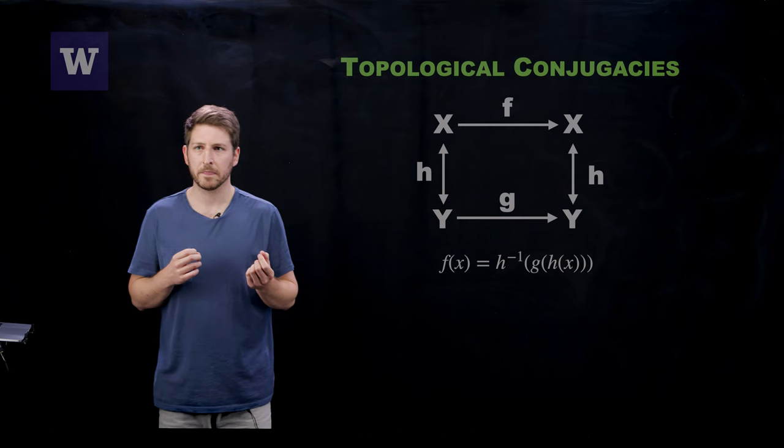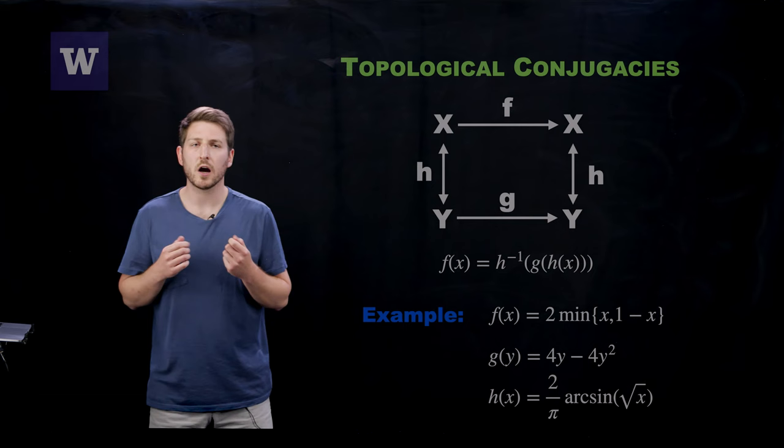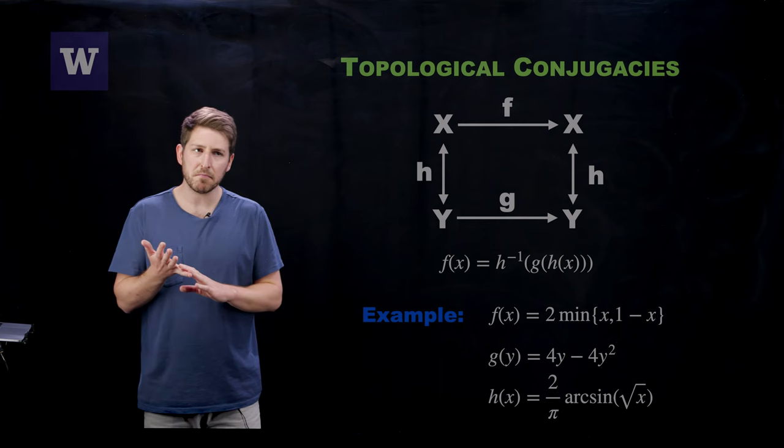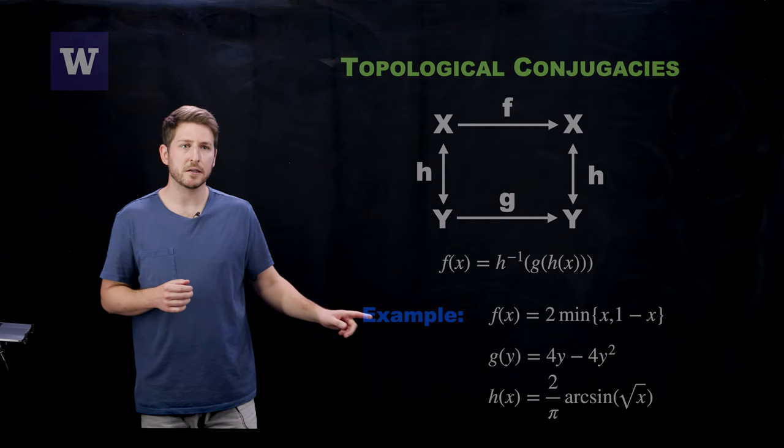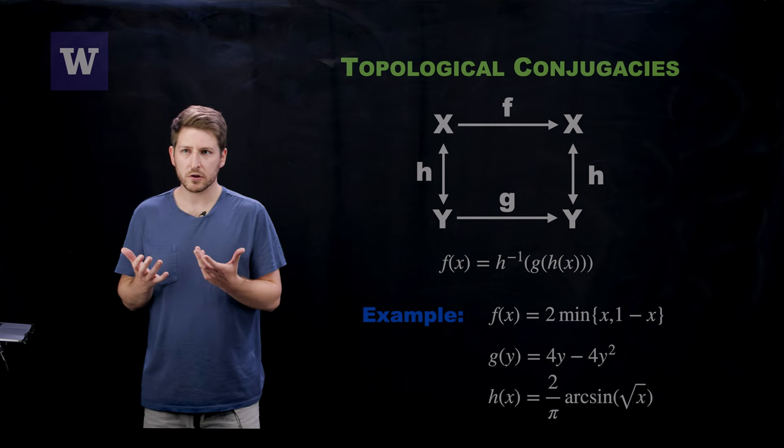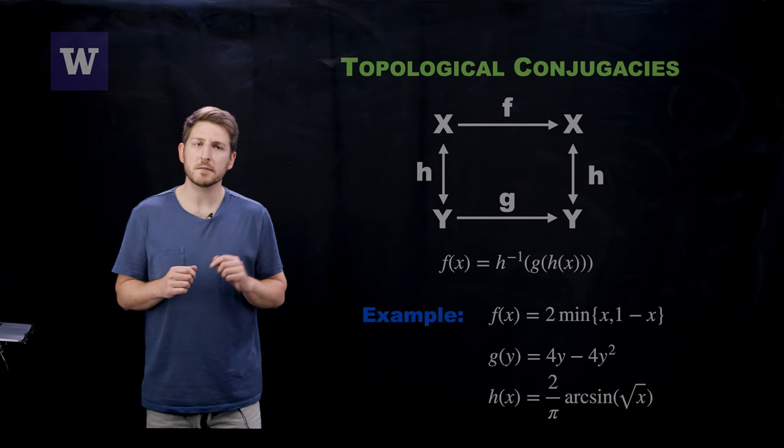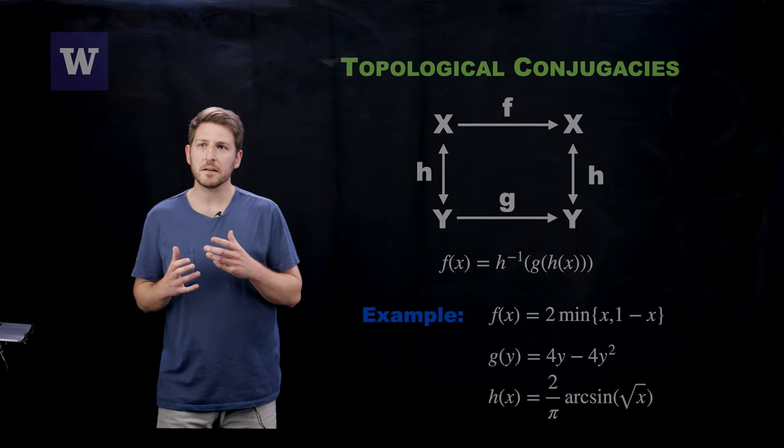So allow me to illustrate this with one of the most well-known examples of topological conjugacies. And that's the conjugacy between the so-called tent mapping, that's the mapping f down here, and the logistic mapping, that's the mapping g down here. And although these are simple one-dimensional mappings, I emphasize that from a model discovery standpoint, one of these mappings is much more difficult to find than the other.